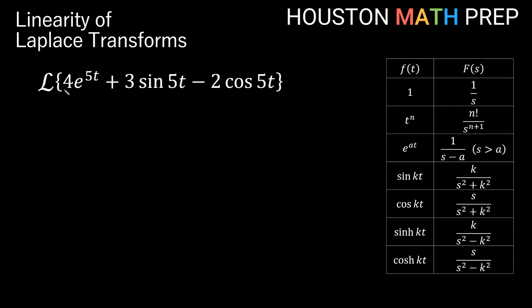Looking at one more Laplace Transform of 4e to the 5t plus 3 sine 5t minus 2 cosine 5t. Let's go ahead and change this all at once. I'll go ahead and split it up and bump my constants out. So this will be the same as 4 times the Laplace Transform of e to the 5t plus 3 times the Transform of sine 5t minus 2 times the Transform of cosine of 5t.